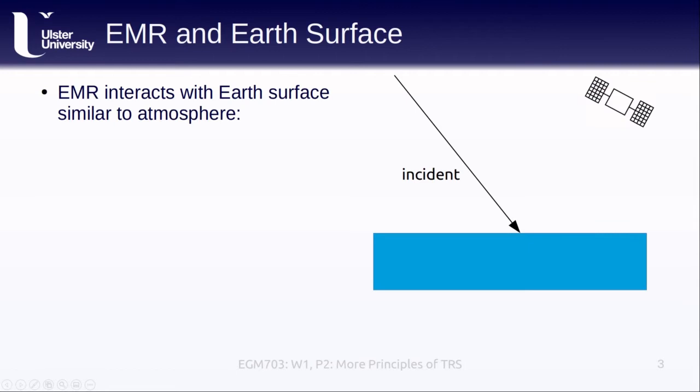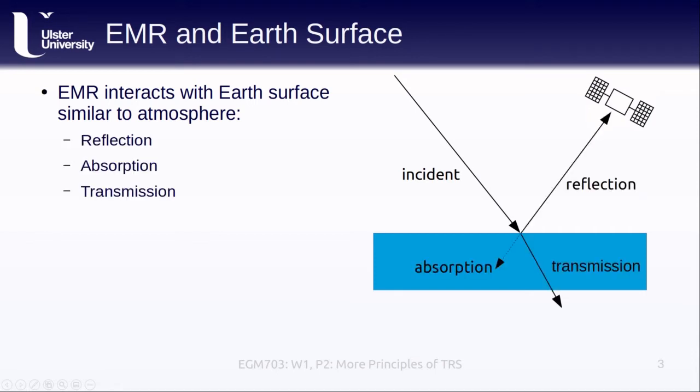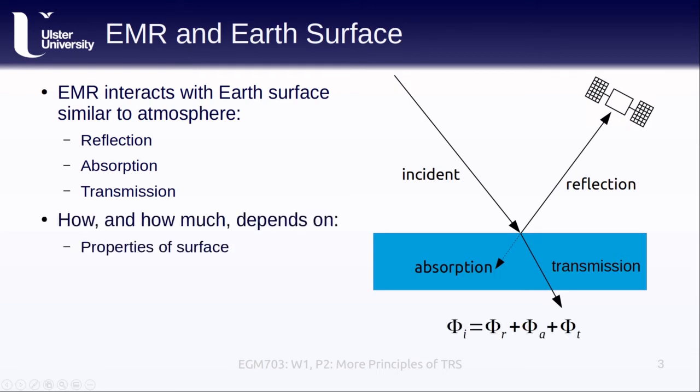Similar to what we discussed for the atmosphere, electromagnetic radiation interacts with the Earth's surface by either being reflected, absorbed, or transmitted. How it interacts with the surface depends on the properties of the surface, the wavelength of the electromagnetic radiation, and the angle of illumination, or incidence. It's important to note that these are not mutually exclusive things. An object can transmit some incident radiation, absorb some, and reflect the rest.